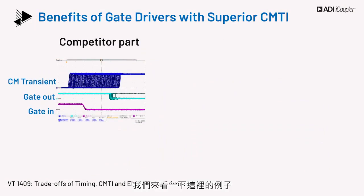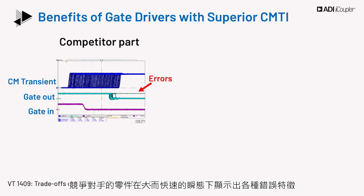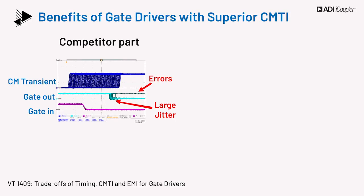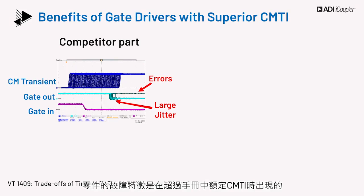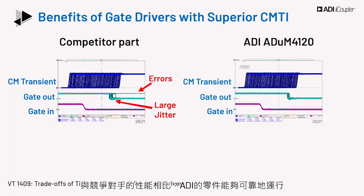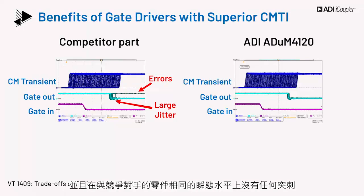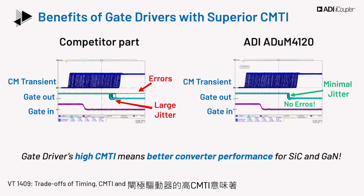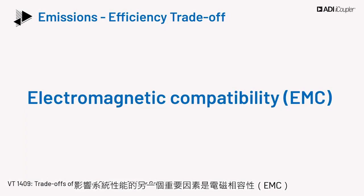Let's look at an example shown here. The competitor part shows various error signatures at large and fast transients. Using such a part in the system may not be suitable in a SiC or GaN system which has fast transients. In fairness, the failure signature is obtained above the rated CMTI of the part as per the datasheet. In comparison, the ADI part is able to reliably operate without any glitch at the same transient level as the competitor part. The transients shown in the figure are at a spec higher than quoted in the datasheet. A gate driver's high CMTI means better converter performance for SiC and GaN.